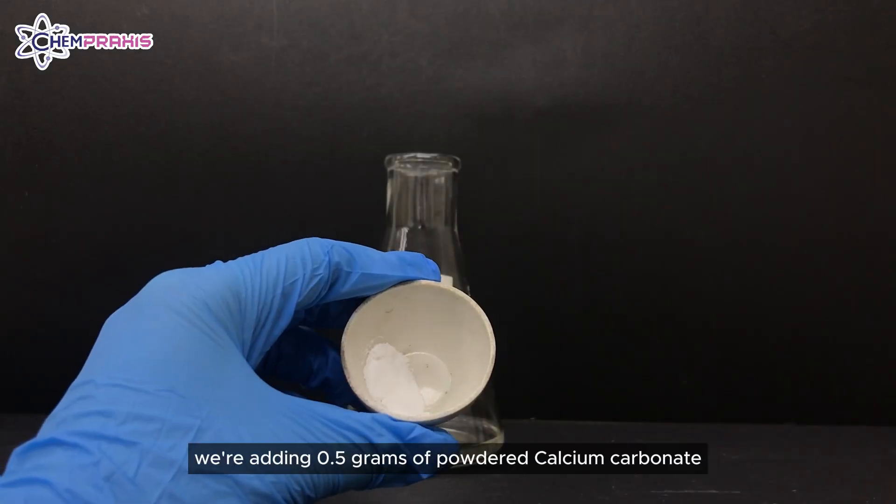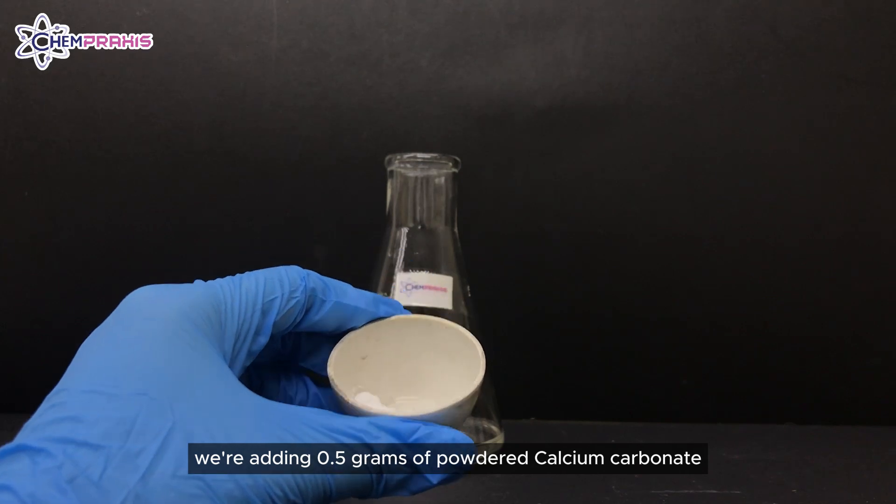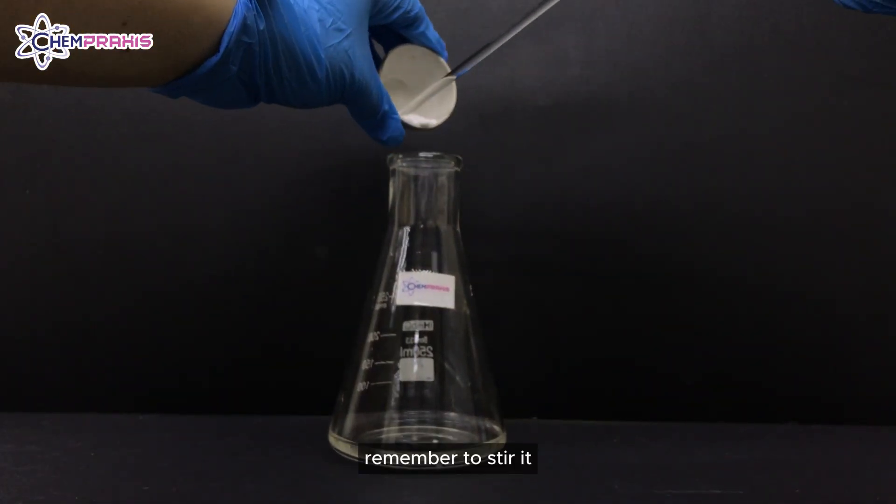This time, we're adding 0.5 g of powdered calcium carbonate into the conical flask. Remember to stir it.